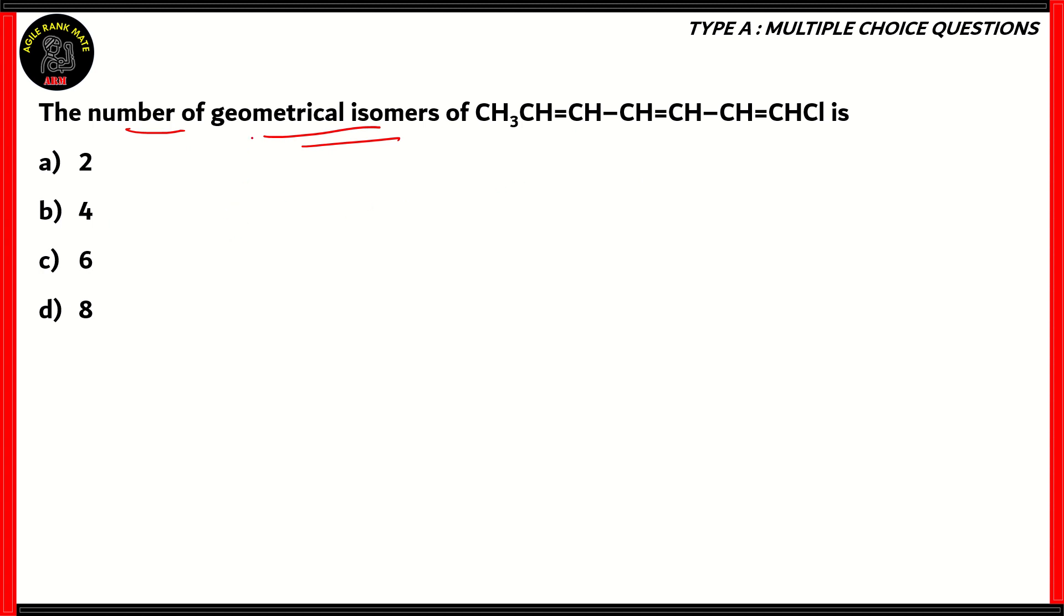So how do we find out the number of geometrical isomers? The number of geometrical isomers is usually represented as 2 raised to N, where N is the number of double bonds where each carbon atom is differently distributed.